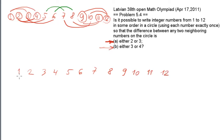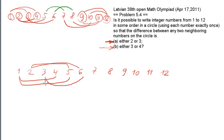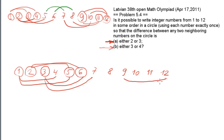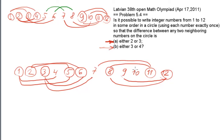Building the same line and connecting neighbors: number 1 can only have neighbors 4 and 5; number 2 can have neighbors 5 and 6; number 3 can only have neighbors 6 and 7. The largest number, 12, can have neighbors 9 and 8; number 11 can only have neighbors 8 and 7. Number 10 can have neighbors either 7 or 6 — it can have 7, and it can have 6.